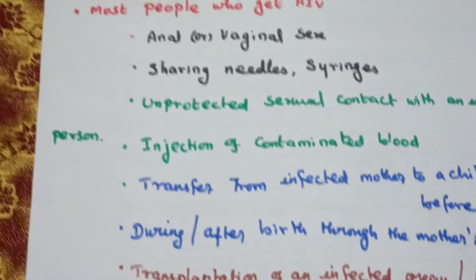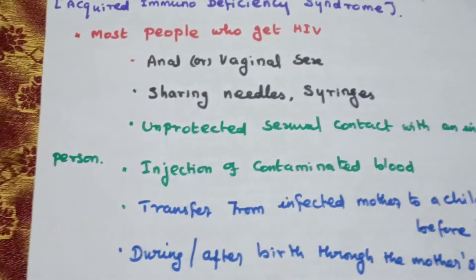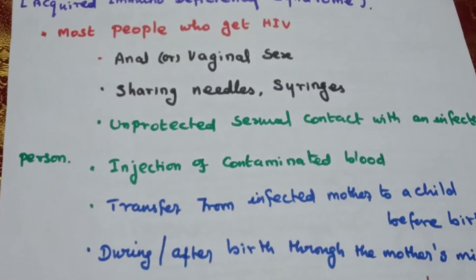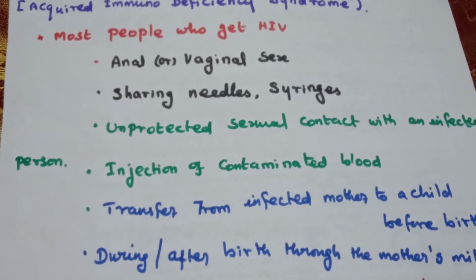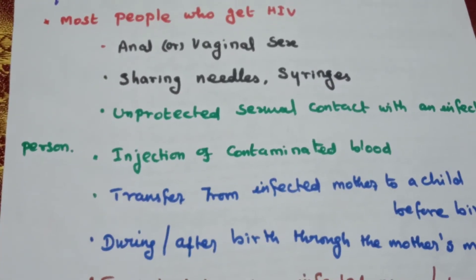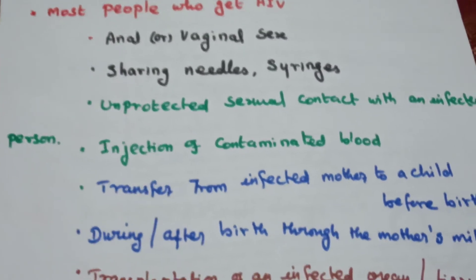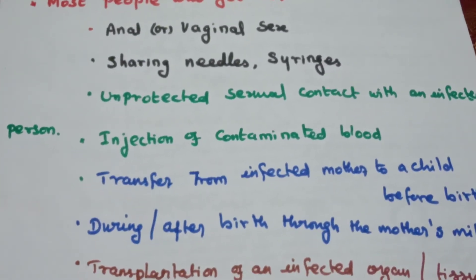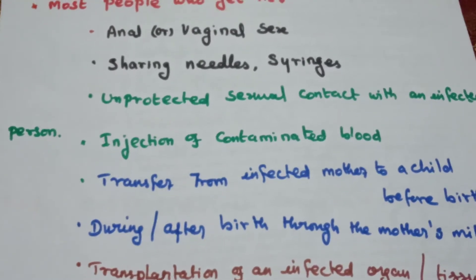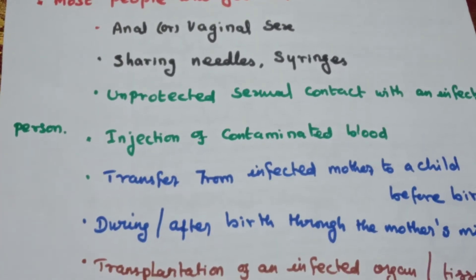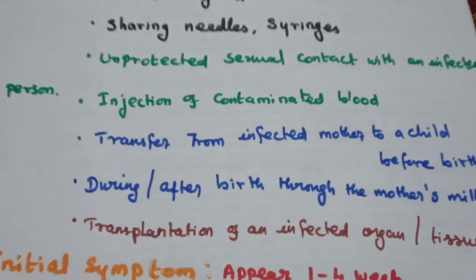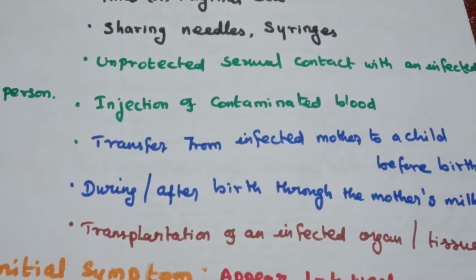The ways HIV will transmit: through sex — anal or vaginal sex. Sharing syringes and needles. Unprotected sexual contact with an infected person. Injection of contaminated blood. Transfer from an infected mother to child before birth, after or during birth through mother's milk. And transplantation of an infected organ or tissue.